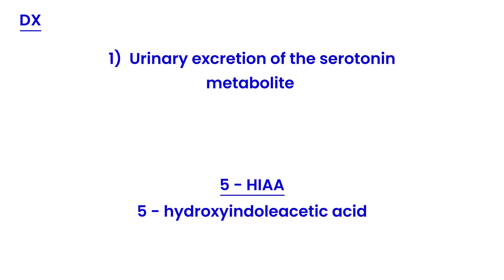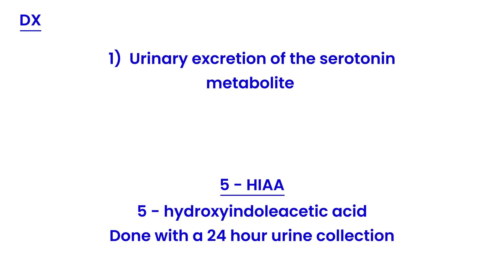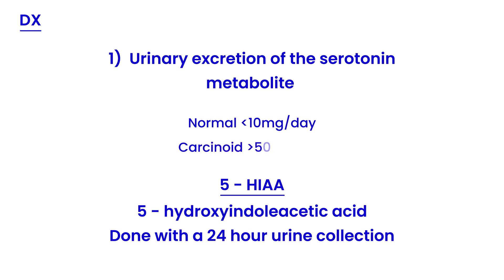Essentially, 5-HIAA is a serotonin metabolite that you will find in high quantities in the urine. To detect it, you perform a 24-hour urine collection and test that sample. The normal value is about 10 milligrams per day, but in carcinoid syndrome it will be much higher — greater than 50 milligrams per day.